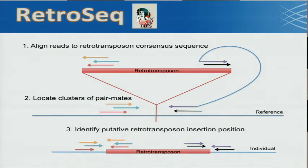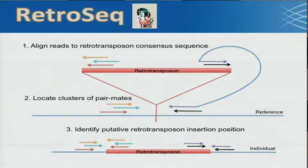RetroSeq does go back to the reads that align to the retrotransposon consensus sequence. We reassemble them de novo to really try to determine what particular retrotransposon element it was that inserted at that location.